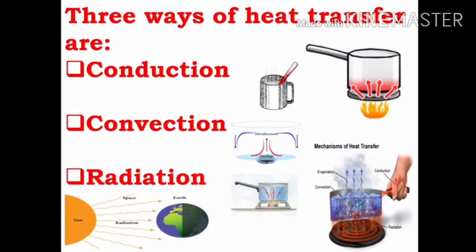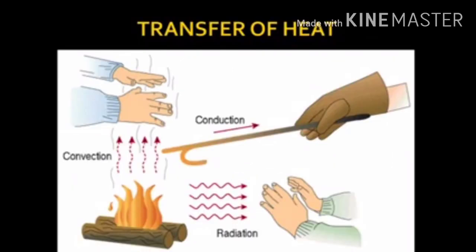There are three ways of heat transfer: the first one is conduction, the second one is convection, and the third one is radiation. See the diagram. Conduction means you heat one end of a rod and heat transfers from one end to the other end. Convection is when you feel the heat energy through fluid movement. And radiation is when electromagnetic waves carry the heat energy.